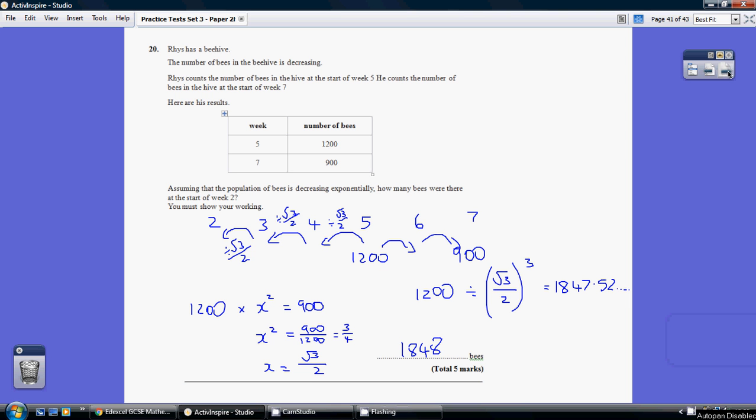Question 20. We're told that the number of bees after week 5 were 1,200, and two years later, after year 6 and then after year 7, the number of bees are down to 900.